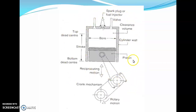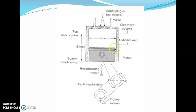This is the nomenclature of the IC engine. You can see the spark plug and the stroke length. From the top position to the bottom position, the piston reciprocates inside the cylinder bore. The cylinder wall houses the piston. The top end of the piston's travel is called the Top Dead Center (TDC) and the bottom end is called the Bottom Dead Center (BDC). The piston is attached to a connecting rod, and the connecting rod is attached to the crank. The piston reciprocates and the crank rotates.